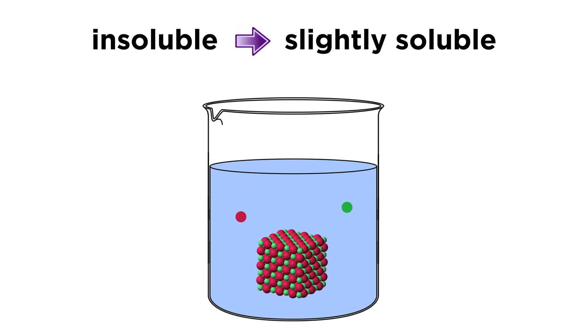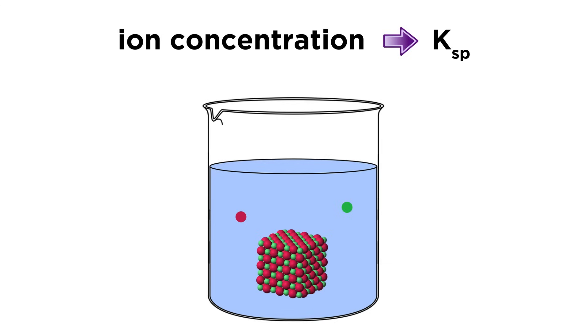In this way, a number of ionic compounds that we previously deemed insoluble should actually be categorized as slightly soluble. If we have a way of measuring ion concentrations in solution, we can calculate the Ksp value for a given substance.